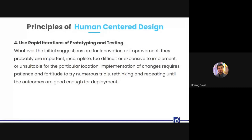Fourth: rapid iteration, prototyping, and testing. Whenever we come up with an improvement or innovation, it is likely imperfect, incomplete, too difficult, or too expensive at first. It is highly unlikely to get things right the first time. We need to prototype fast and test fast with actual users and the actual target audience, then reiterate on those findings, make new prototypes, and test again until the final product is ready to be shipped.